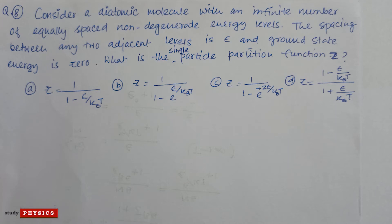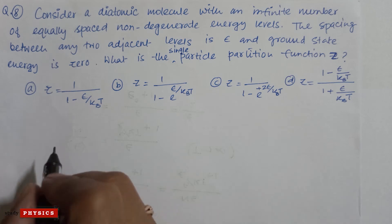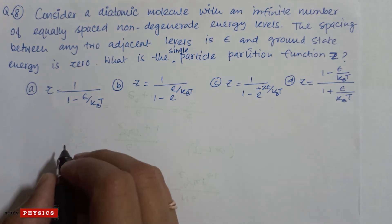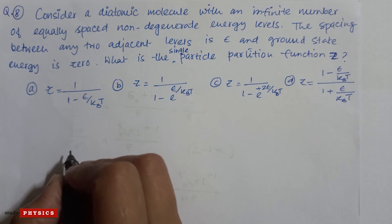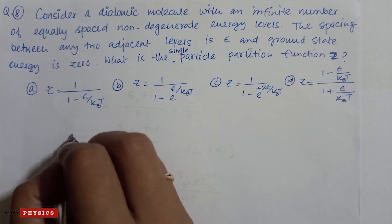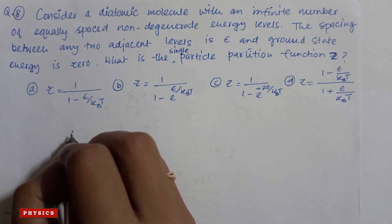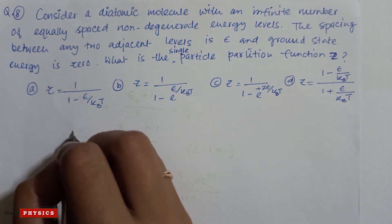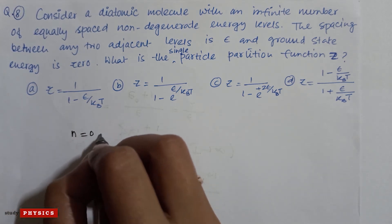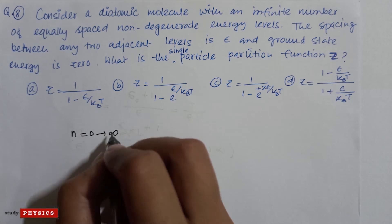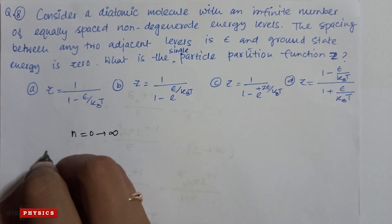You are given four options. For a diatomic molecule with an infinite number of equally spaced non-degenerate energy levels, the quantum number n goes from zero to infinity. So the partition function Z = summation over i of g_i × e^(−βE_i).